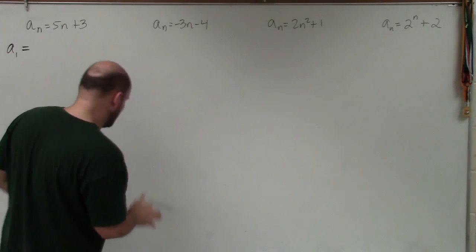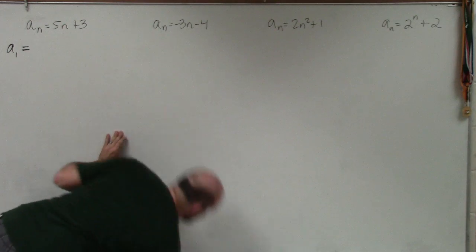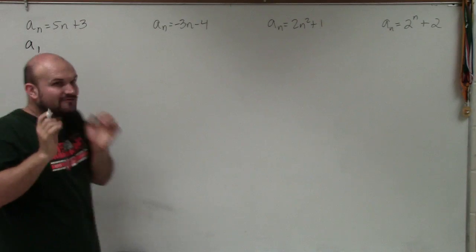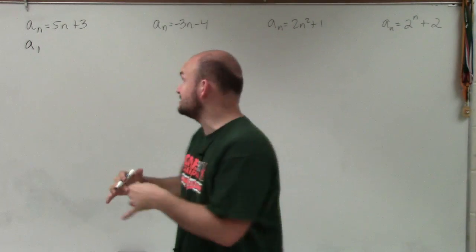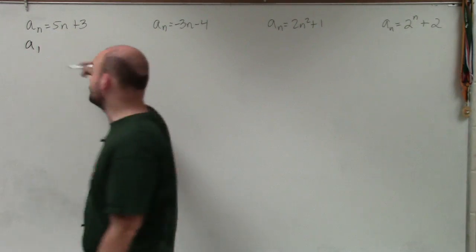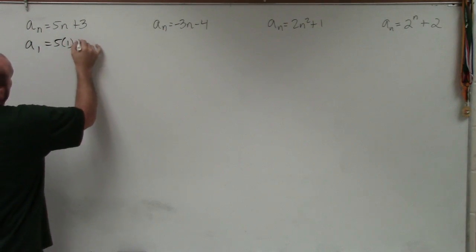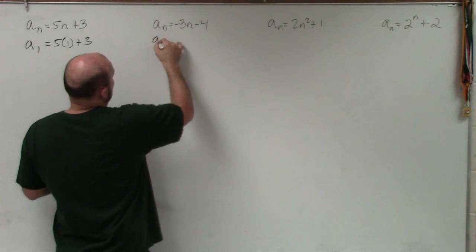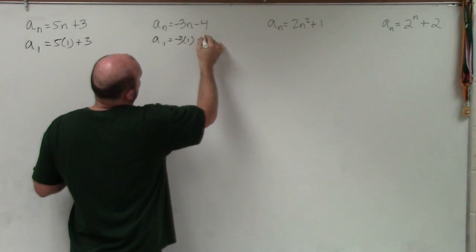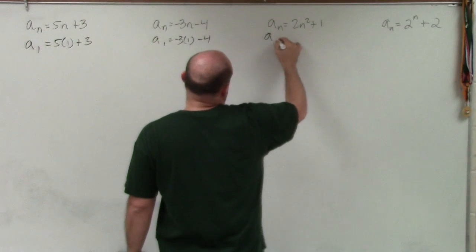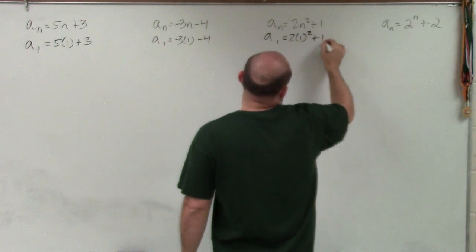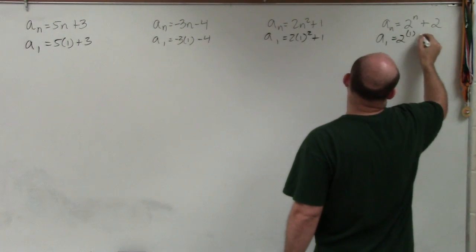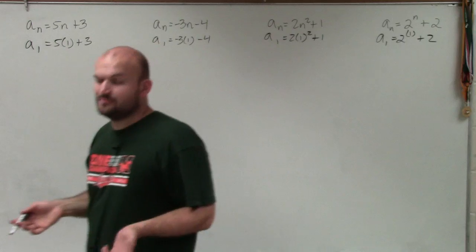And then I'm going to now replace. Actually, I could just write that there. Now what I'm going to do is I'm going to replace every single time. So if I want to find the first number in the sequence, a sub 1, first number in the sequence, wherever I see an n, I'm now going to replace that with a 1. So 5 times 1 plus 3. And I think using parentheses is so important whenever you're evaluating or plugging in a number into a rule or function or an equation.